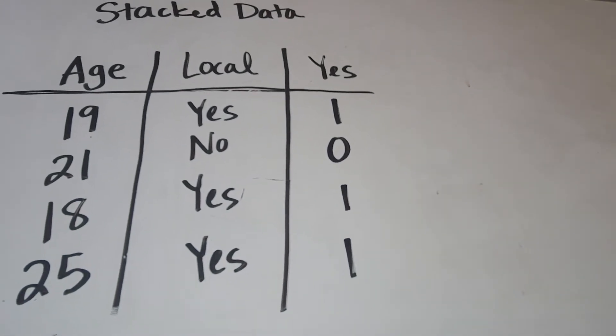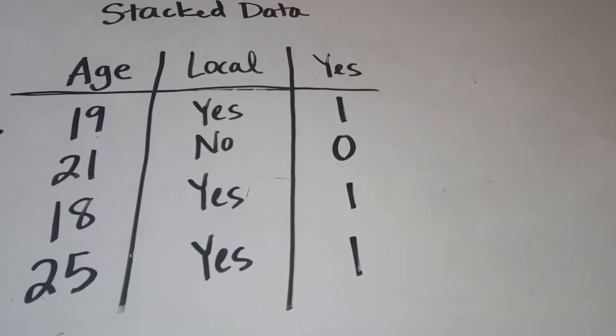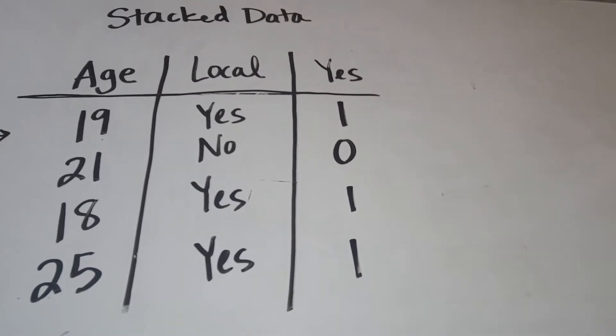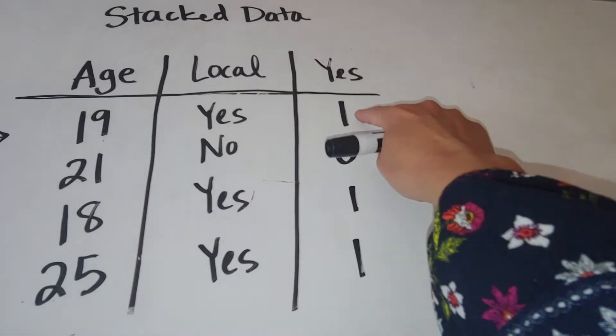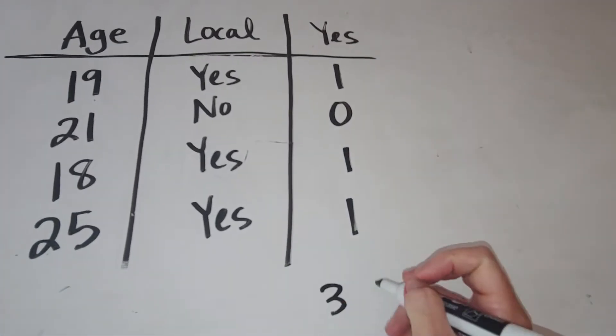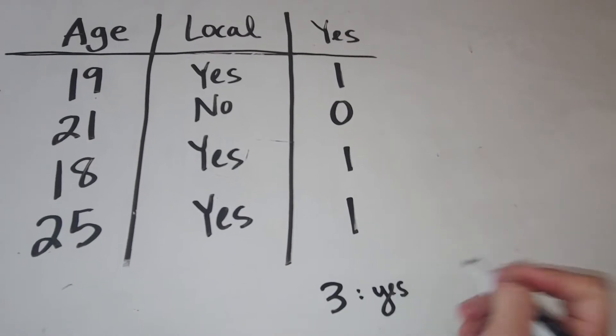So the whole idea is for data entry, it might be easier just to type in ones and zeros. And we could also talk about what the total represents. If you actually totaled up this column, getting the answer of three represents three yeses.